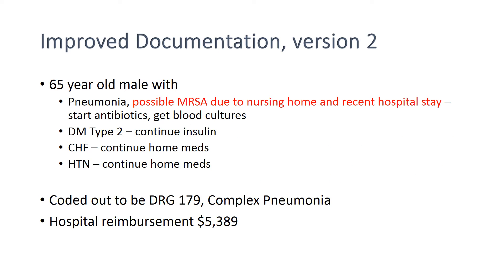You could improve this documentation by specifying: '65-year-old male with pneumonia, possible MRSA due to nursing home residence and a recent hospital stay, start antibiotics, get blood cultures.' Just changing that would likely result in this being coded as DRG-179, complex pneumonia. The hospital reimbursement for this is about $5,400.